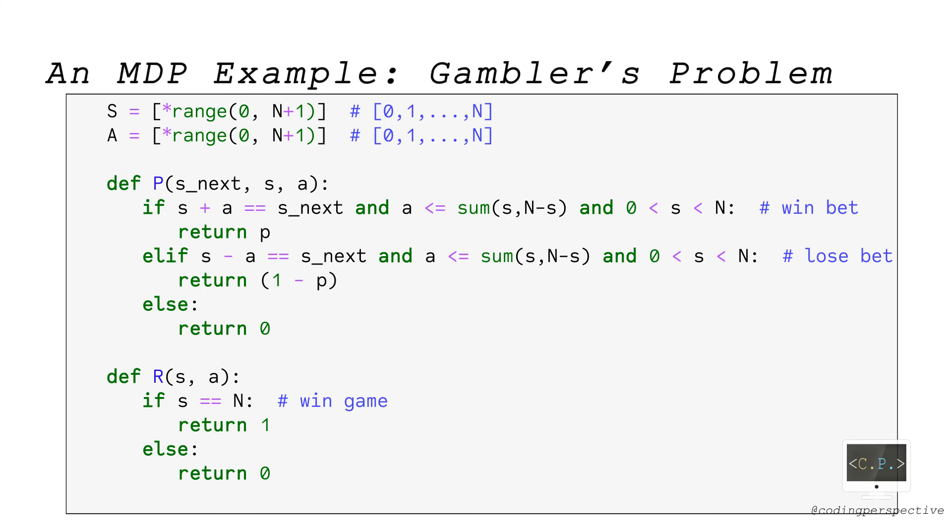Lastly, we define function R in a way that it returns 1 if S is equal to N because it's the only state that the gambler wins the game. Now, we are ready to run our function with these inputs. These inputs are totally problem-specific. So, depending on your problem, you may need to modify them.